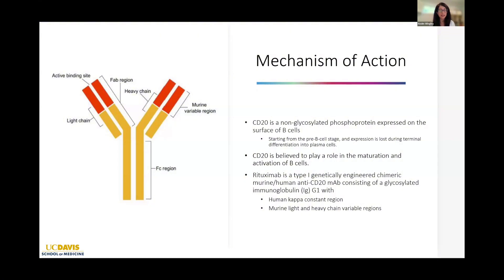Rituximab is actually one of the first type 1 generation engineered chimeric murine and human anti-CD20 monoclonal antibodies. As you can see in the pictorial, the yellow constant regions are from human models and the variable regions are murine in origin.